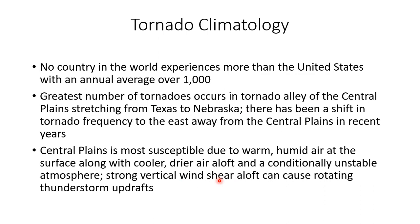Where do tornadoes occur? No country in the world compares to the United States, with an annual average of over 1,000 tornadoes per year. The greatest number occurs in what's known as Tornado Alley in the central plains, stretching from Texas all the way to Nebraska. Interestingly, over the past two decades there has been a shift in tornado frequency toward the east — away from the typical Texas-Oklahoma-Nebraska area and toward Mississippi and Alabama.